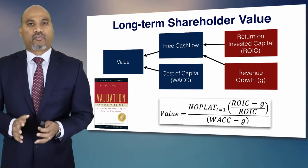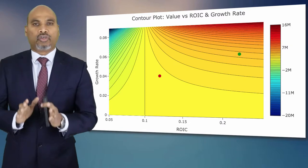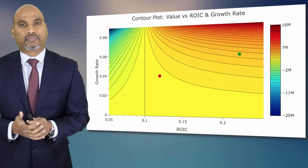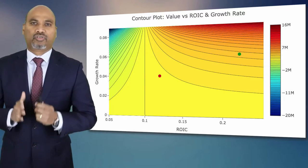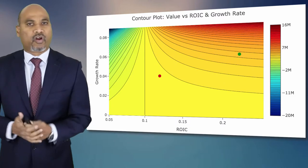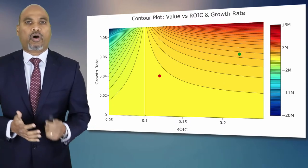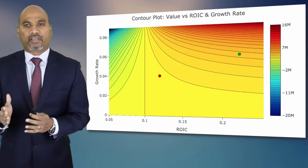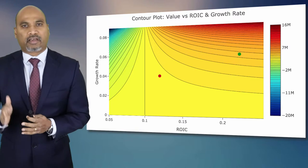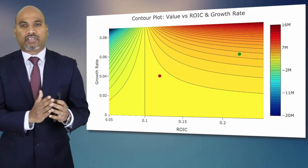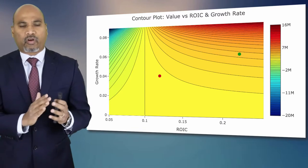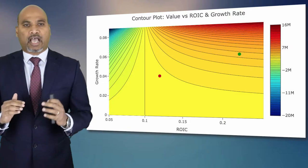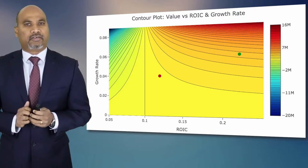If you take this formula and plot it, your value is dependent on ROIC and growth. So anything that you do in your business to improve it must improve ROIC and growth, or at least one of them. This colored contour plot shows value by the color code on the right side. As you increase ROIC — shown on the horizontal axis from left to right — your value increases. As you increase the growth rate, your value increases too.